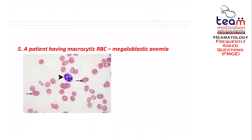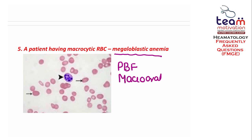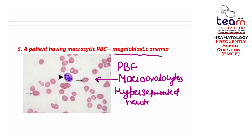A picture was asked regarding a macrocyte, and the diagnosis is megaloblastic anemia. In megaloblastic anemia on the peripheral blood film, there is presence of macro-ovalocytes and hypersegmented neutrophils, which are very well seen in this picture.